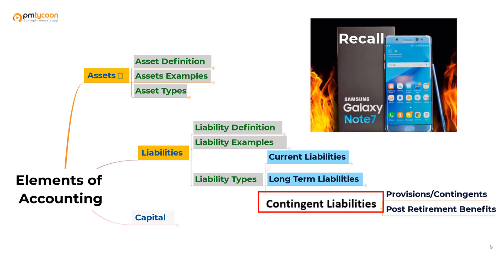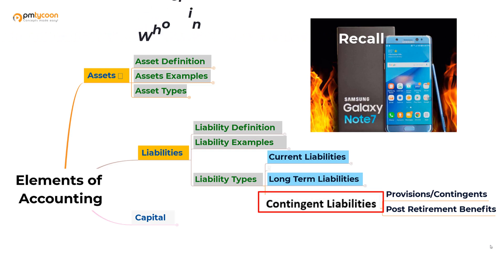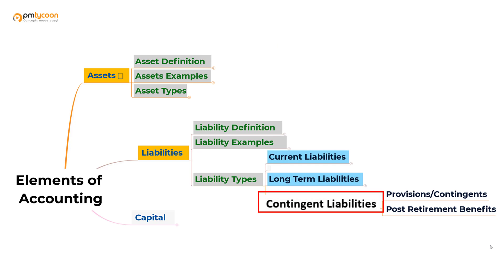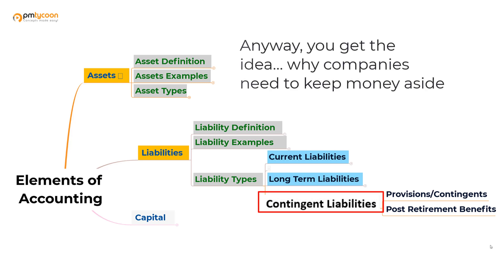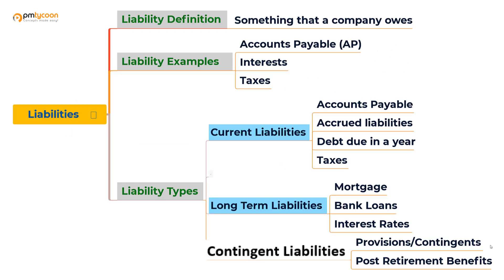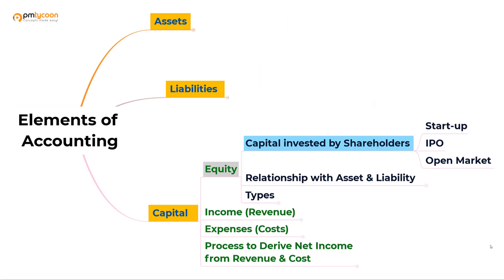Do you remember the Galaxy Note 7 recall? It cost about 5.6 billion dollars — I call it the 'recall from hell' because it's a whopping 5.6 billion dollars for a phone recall. Companies can go out of business if things go haywire. Because Samsung is a big company, it was able to afford that recall, but many companies have gone bankrupt because of product recalls. Anyway, you get the idea — the money set aside for such purposes is called contingent liabilities.